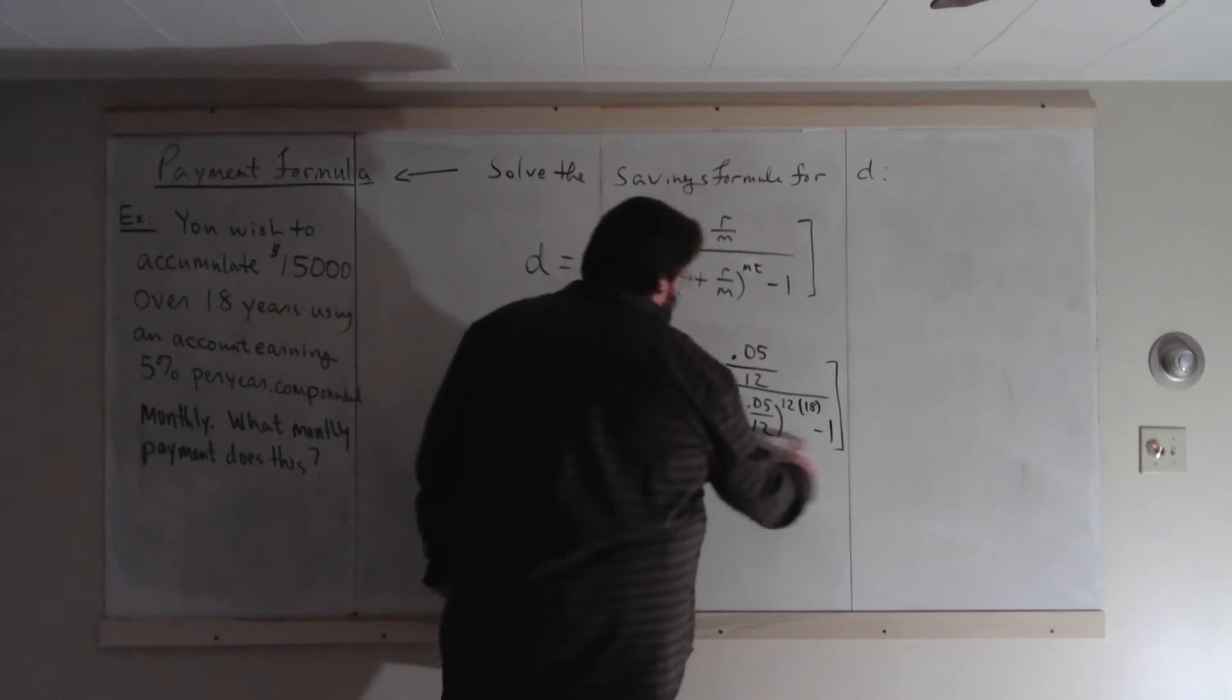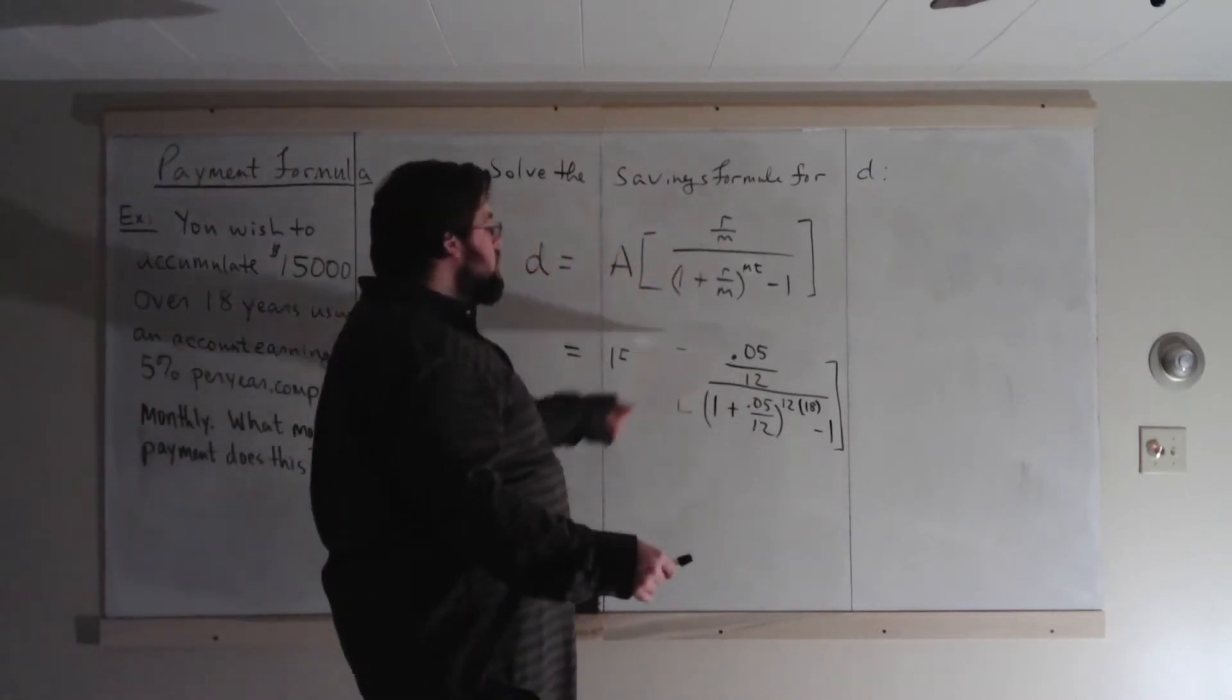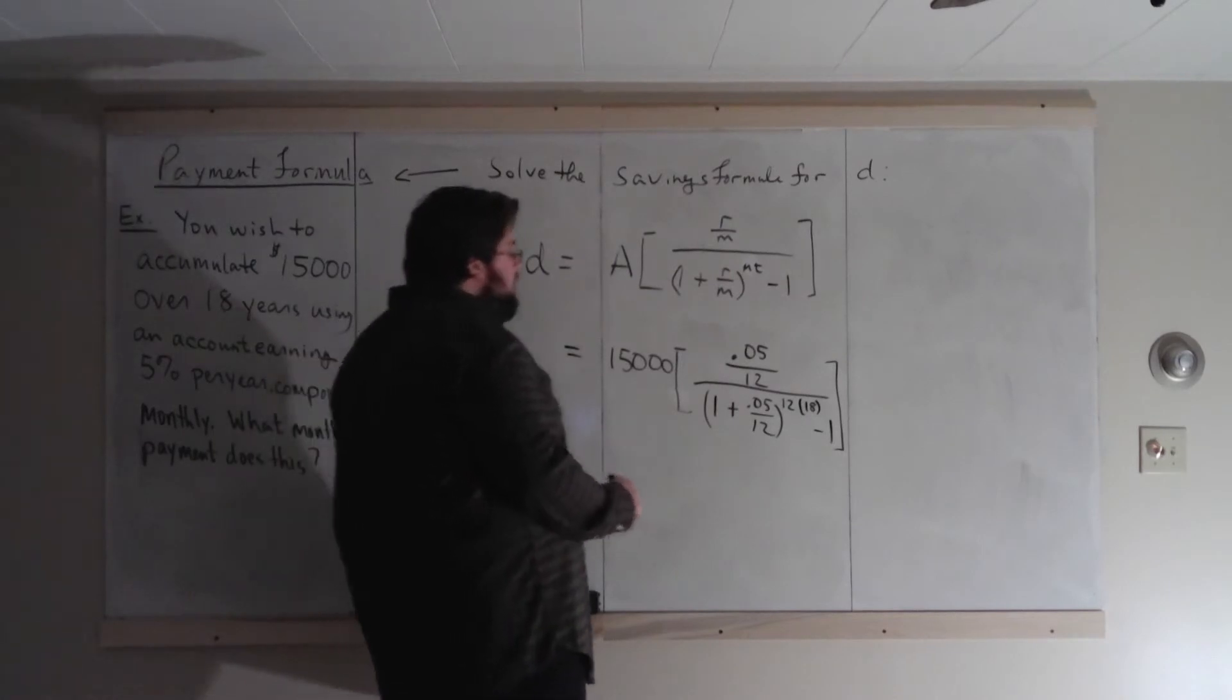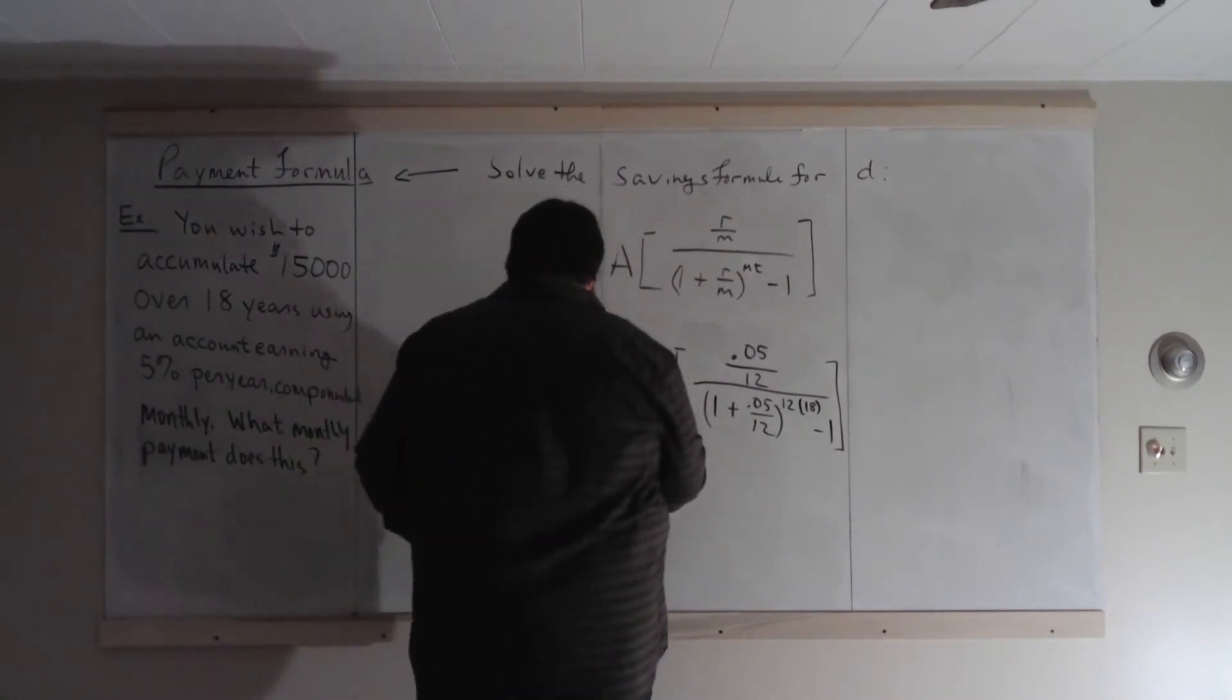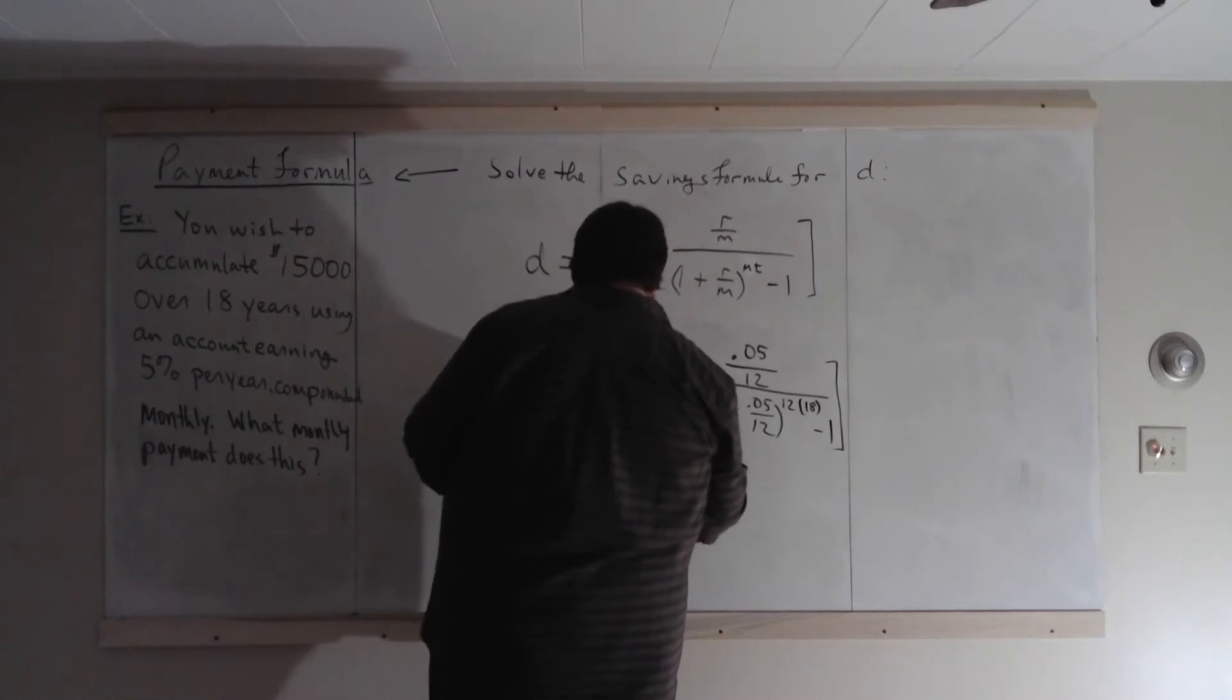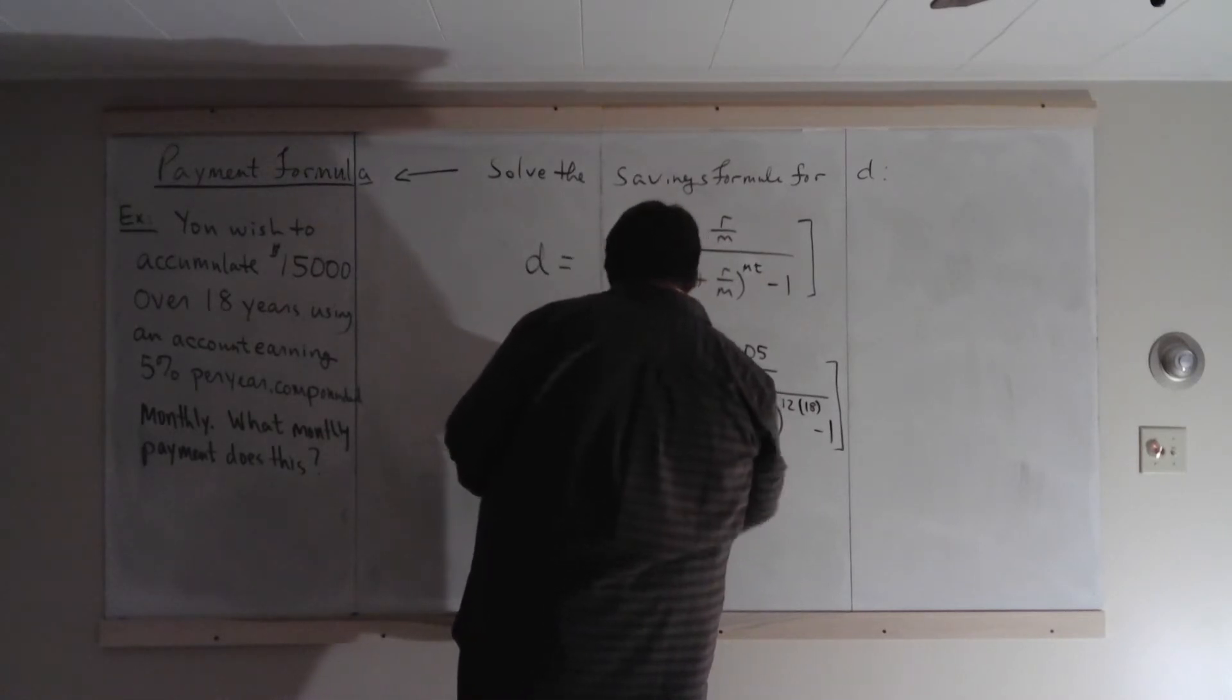But if you can't get that on your screen, I would say to solve this denominator first, then solve the numerator, then divide them, then multiply by 15,000. But here, what does this equal?